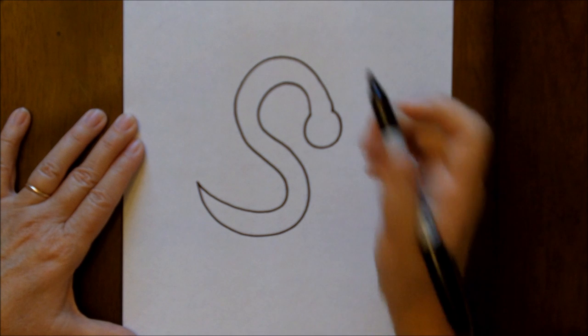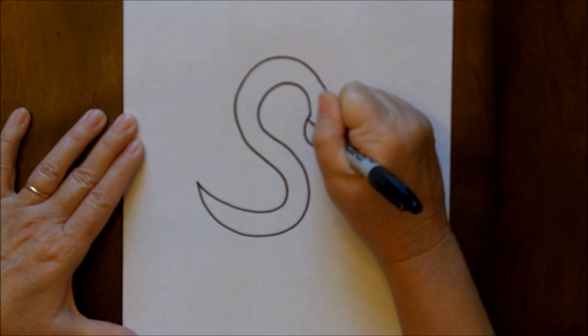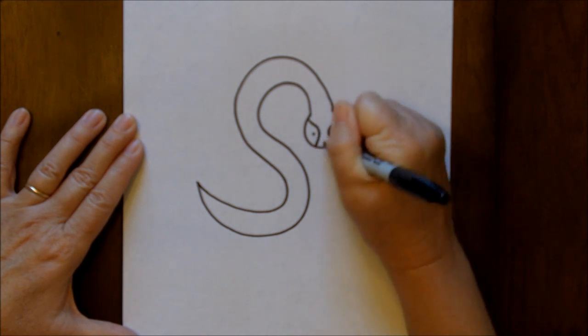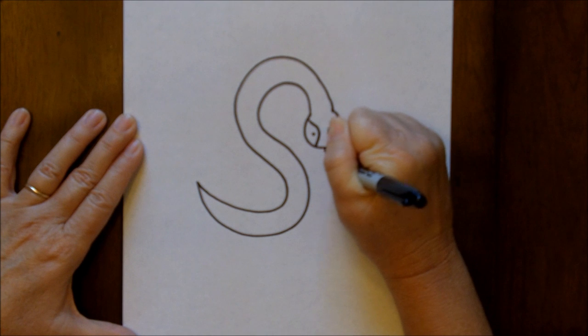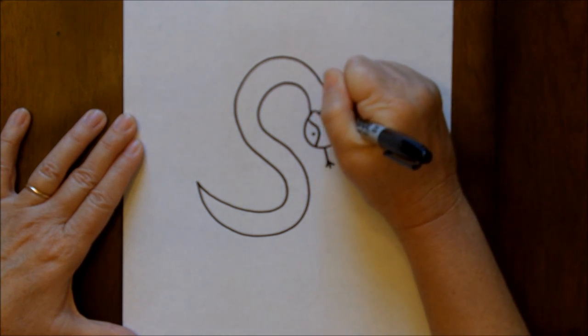Now the neat part about snakes is you can design them any way that you like. You can have eyes that are kind of ominous looking. You can put a little tongue on him and you can make any design inside the snake that you like.